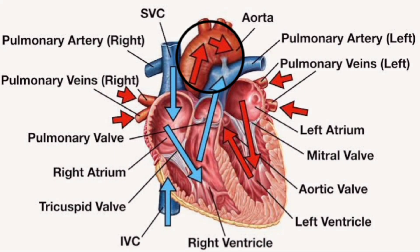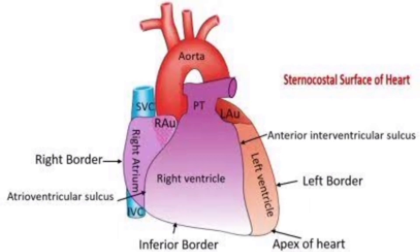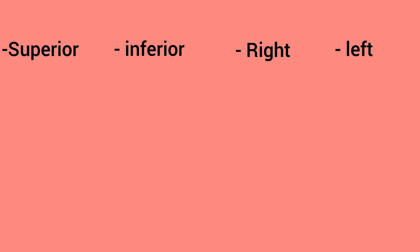The heart resembles a tipped-over pyramid and has four sides in three dimensions. Its base is mostly posterior and its apex points anteriorly, downward, and slightly to the left. In two dimensions, the heart has a trapezoidal shape with superior, inferior, right, and left borders.